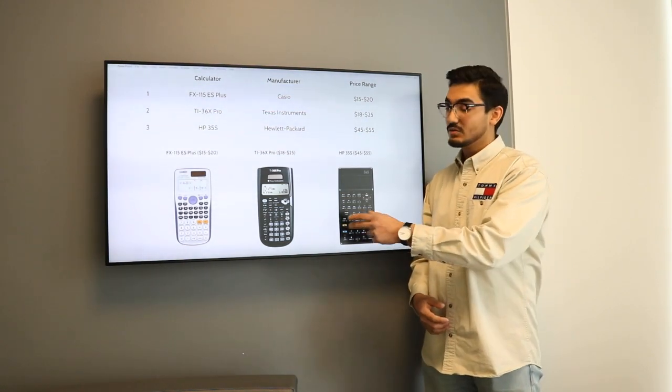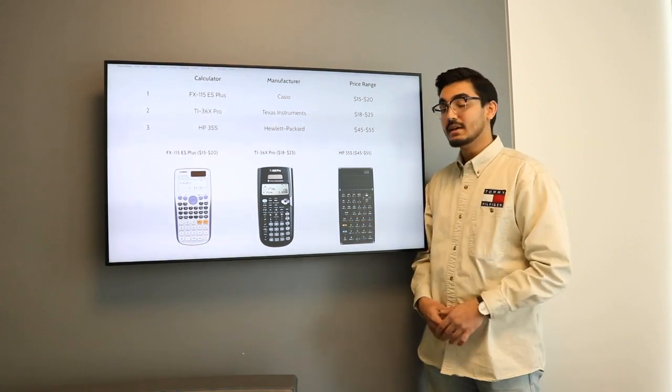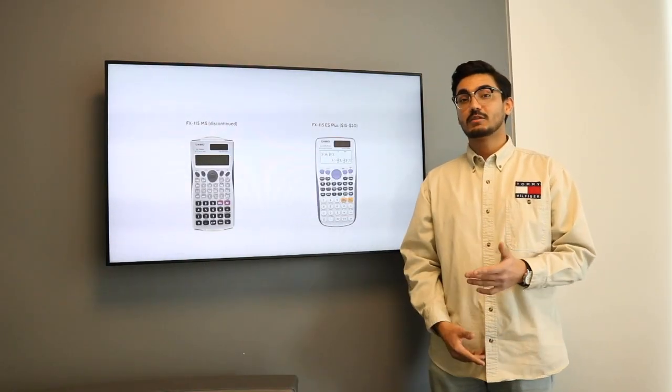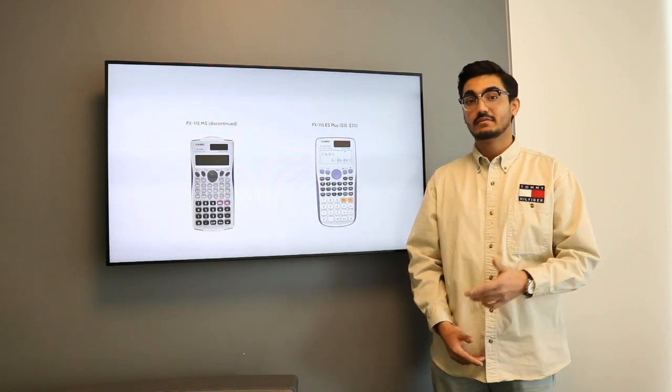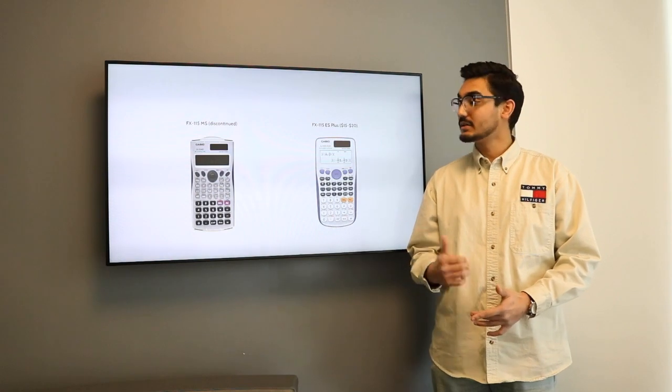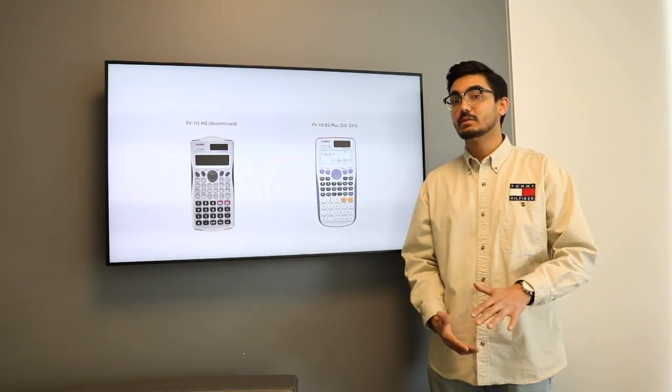The first one is the Casio, the second one is the Texas Instruments, and the third one is the Hewlett Packard. Now I'm going to be giving you a quick rundown of each of these calculators. If you want more information, click the link below, it's going to take you to the blog post that talks about them in depth. Today I'm just going to give you the basics.